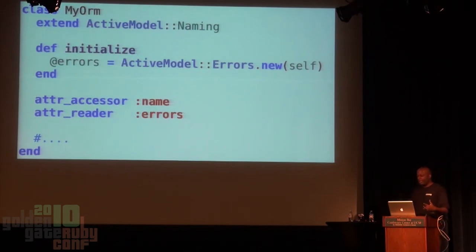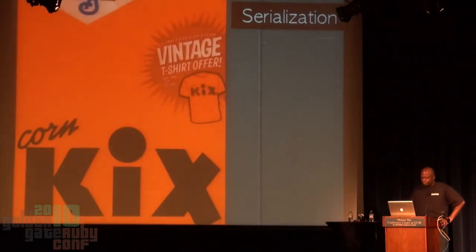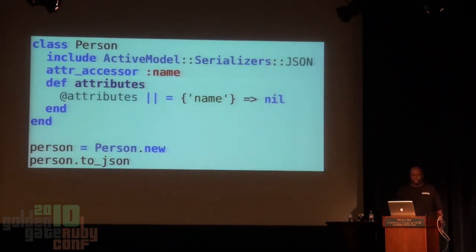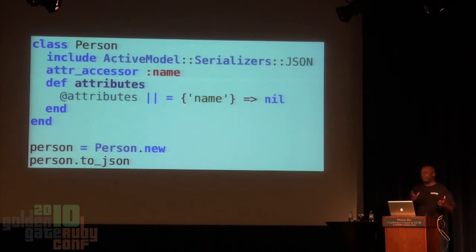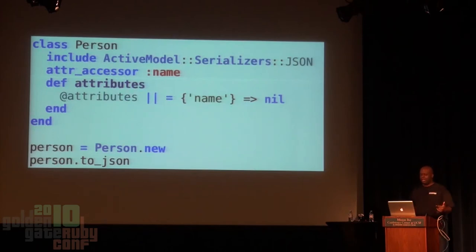And the cool thing is, because now you have errors, you can do validations. Let's also talk about serialization. Another cool thing Active Model gives you is the ability to serialize JSON. I hate manually converting some object to JSON or XML. Active Model gives you this — all you need is an include, declare your attributes, and then use the .to_json method and you automatically get JSON out of it.